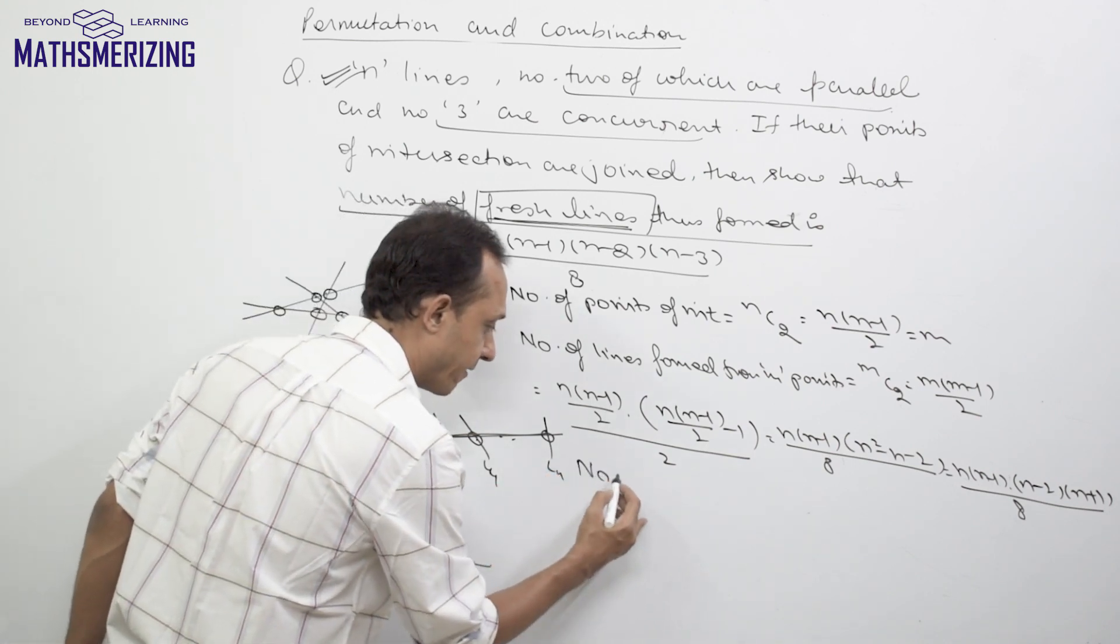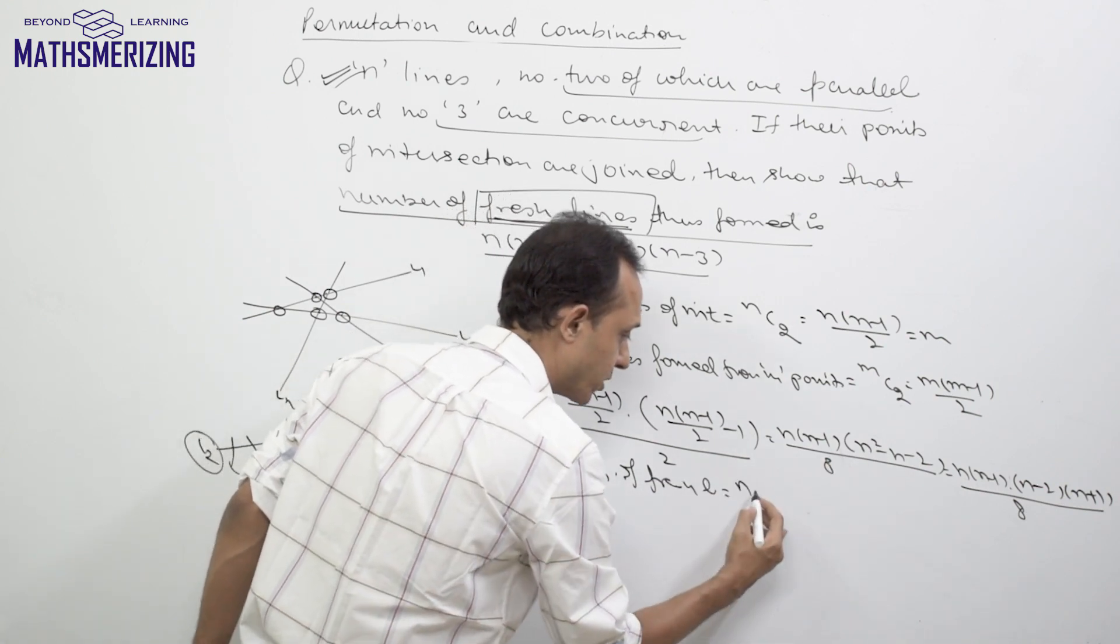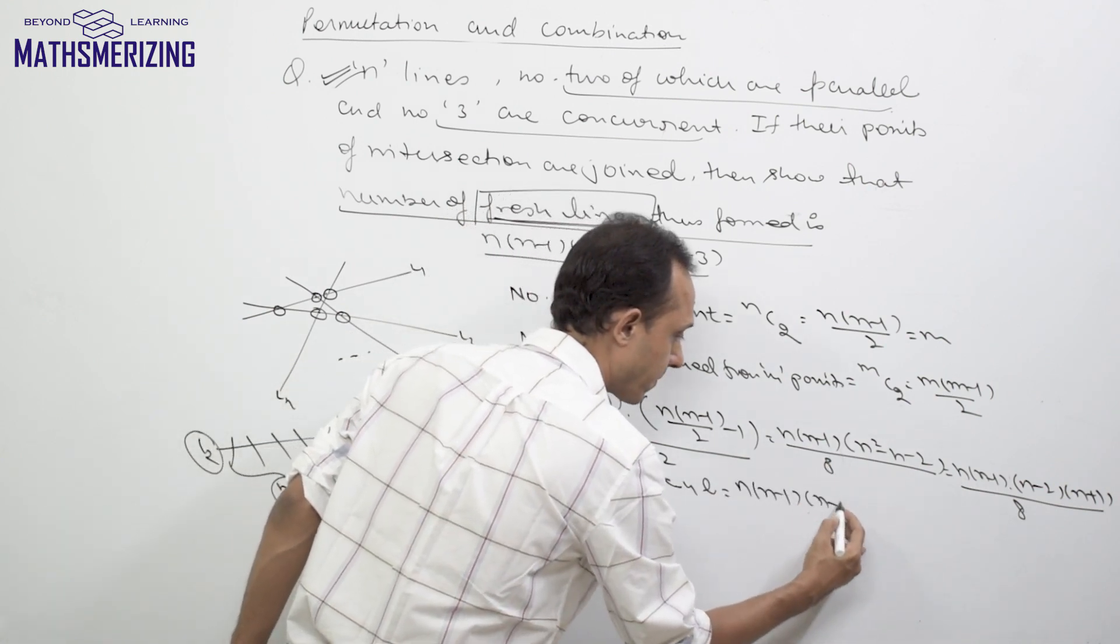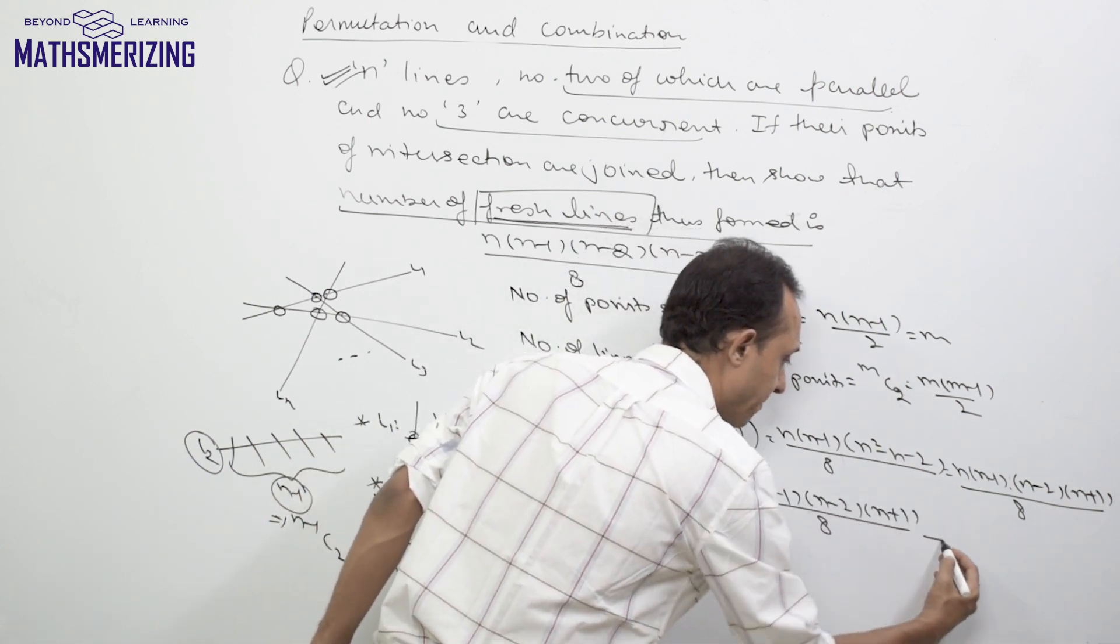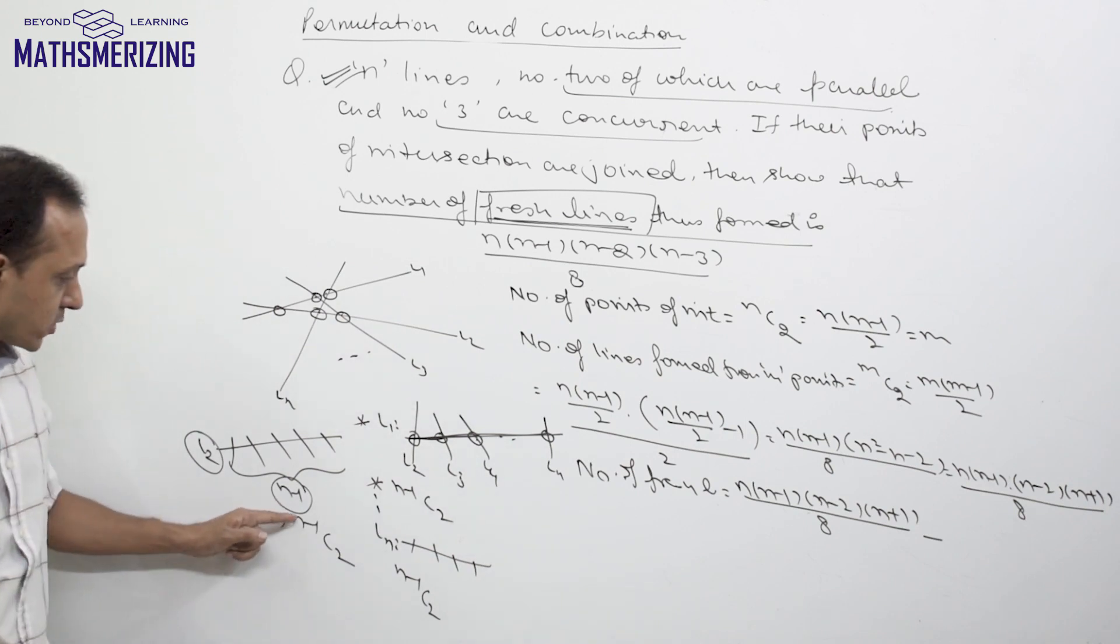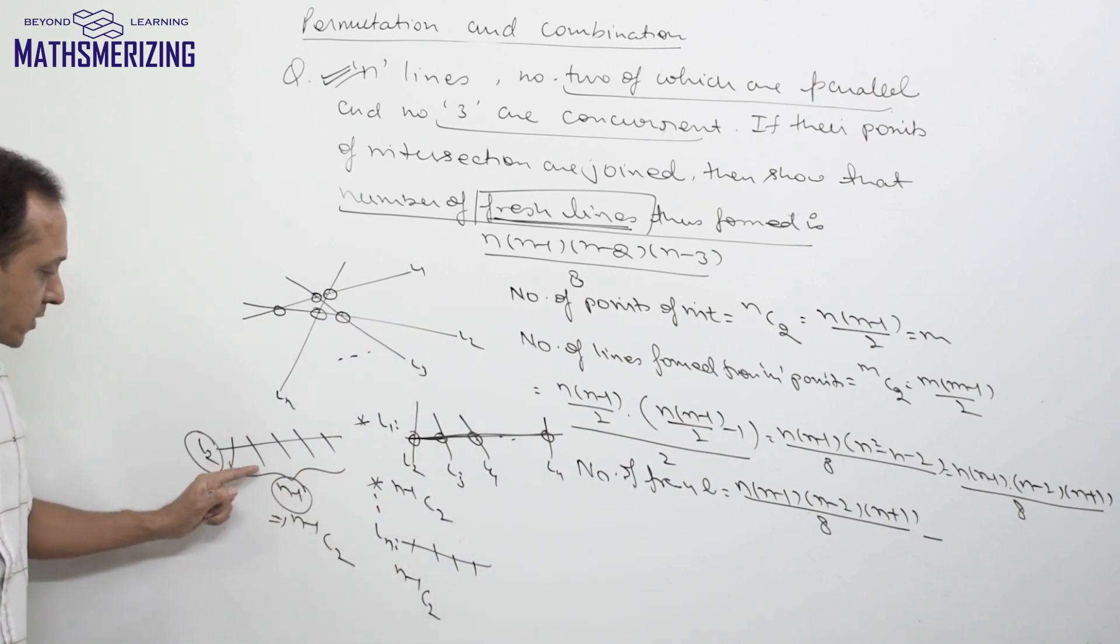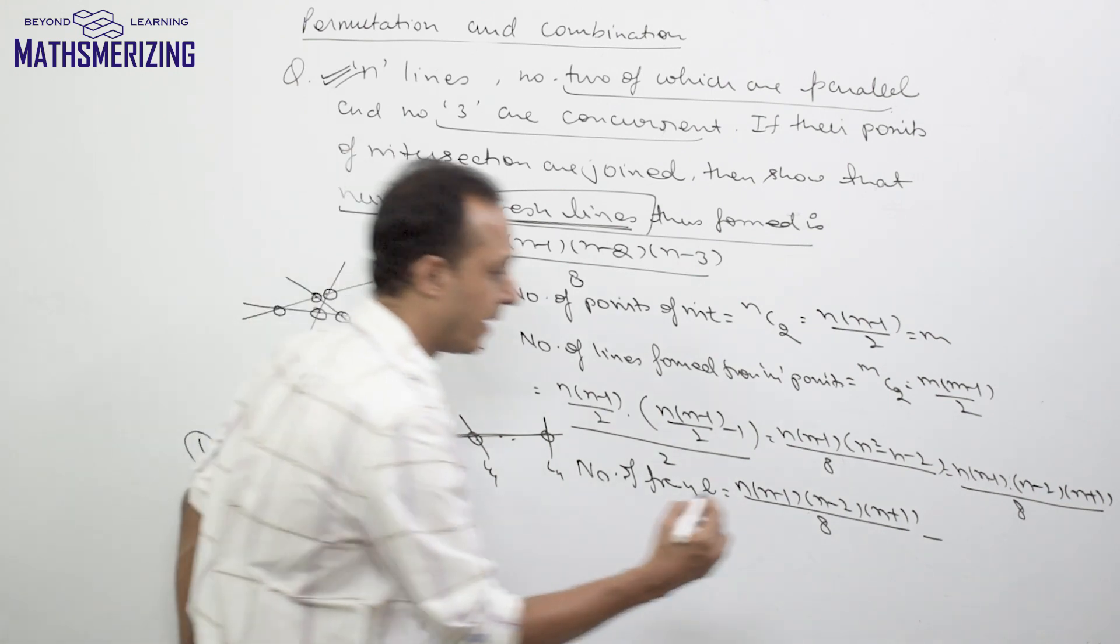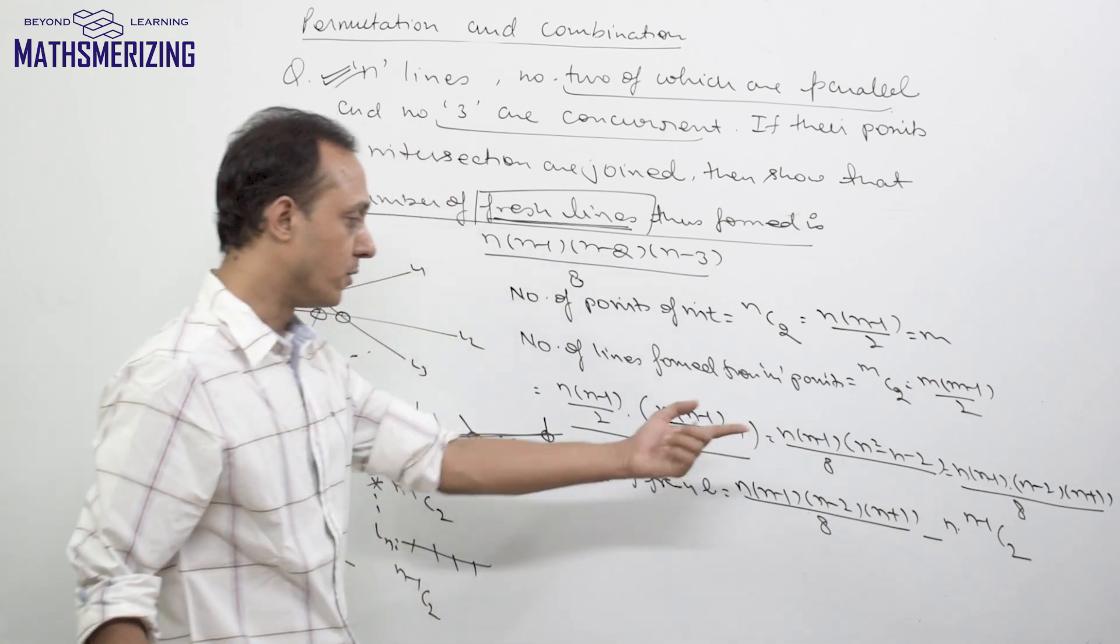The number of fresh lines will be given by the total lines, n(n-1)(n-2)(n+1)/8, minus (n-1)C2 for l1, (n-1)C2 for l2, and (n-1)C2 for ln. So it will be n times (n-1)C2.